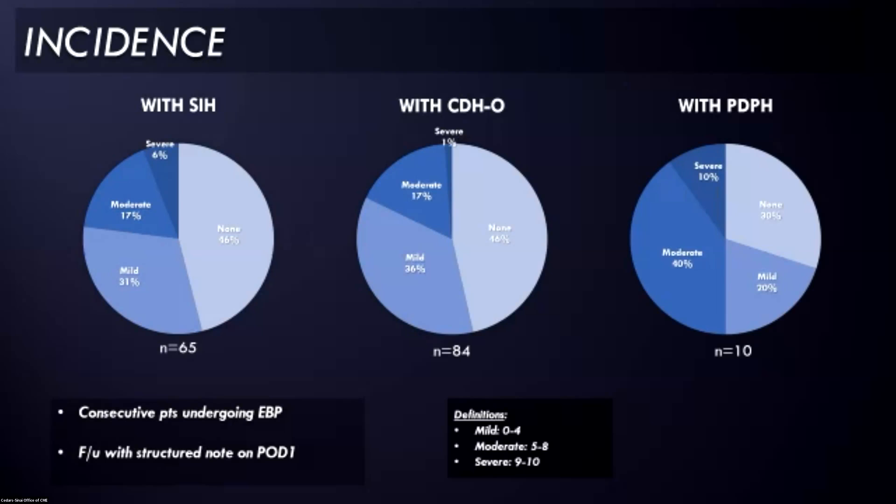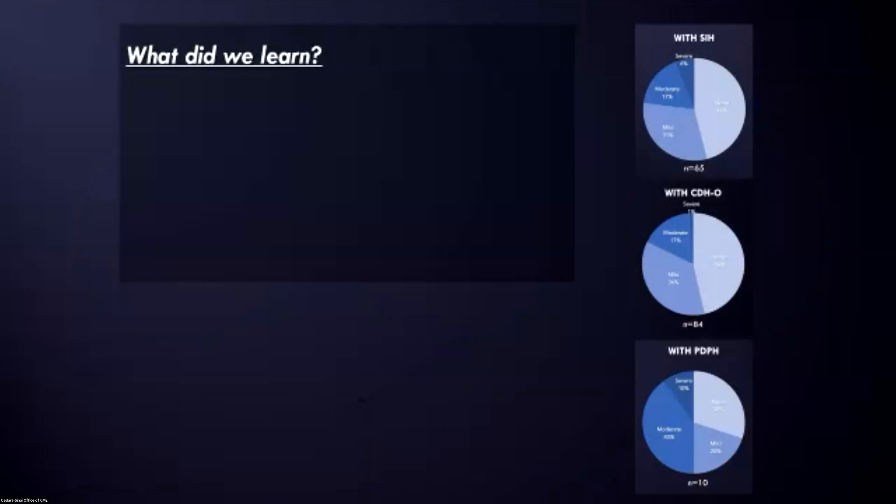We also looked at our patients who had postural puncture headache and who had epidural blood patches for that. Now, these are a smaller N, so this is only an N of 10 in this particular case. But still about 50% of these patients had moderate or severe rebound intracranial hypertension that required treatment with either acetazolamide or lumbar puncture. So what's the take-home message from this data?